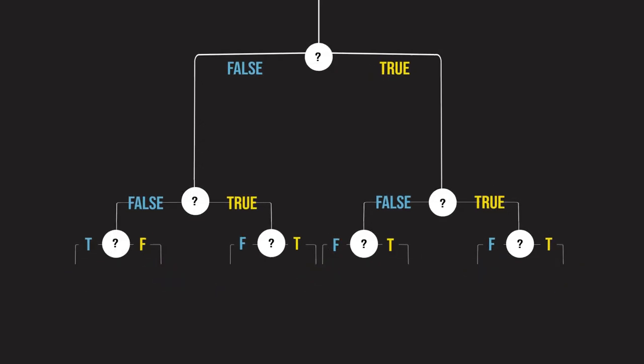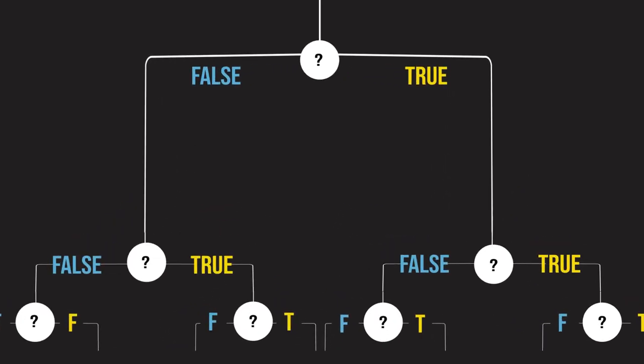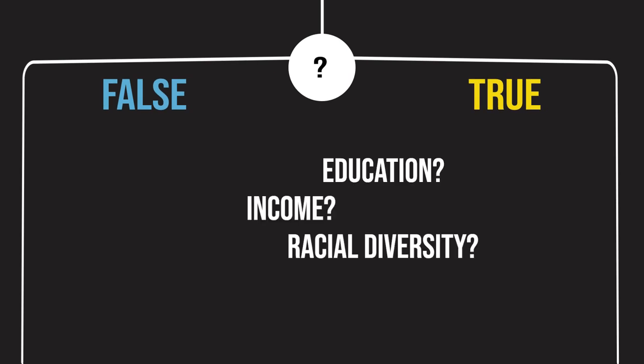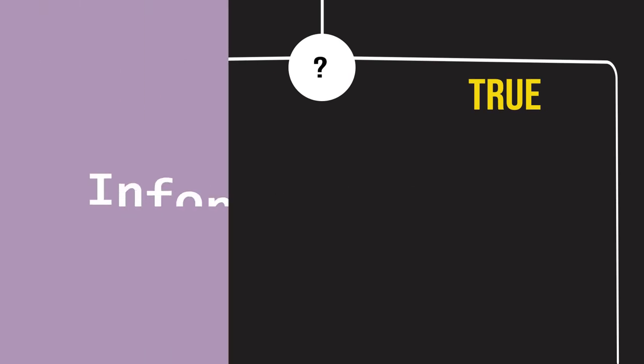Let's now begin creating the decision tree. To create the first decision node, we have to pick a variable to split on. Decision trees use a criterion called information gain to pick the right variable to look at.